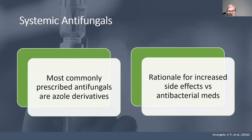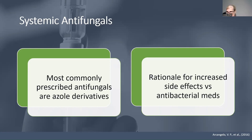Patients can also have fungal bacteremia, treated with antifungals. Fungal infections are more common in immunocompromised patients. The most common antifungals are azole derivatives such as fluconazole and voriconazole. Systemic antifungals have more side effects because they are eukaryotic like human cells — they attack human cells just as they attack fungi, which is why drugs like amphotericin cause more reactions.